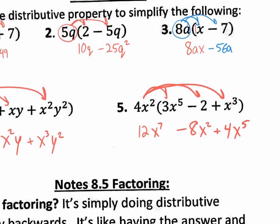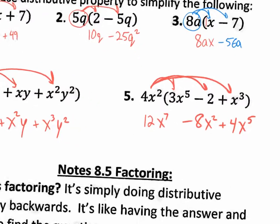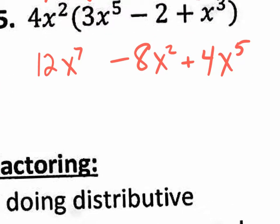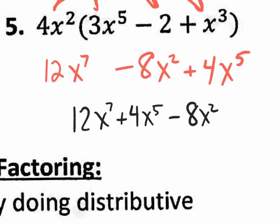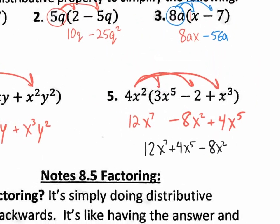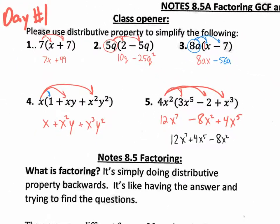I'm noticing that on this one specifically, it's out of order, so let's write it in standard form. The first term, which should be the highest exponent term, is 12x to the seventh. The next term should be 4x to the fifth. And the last term should be minus 8x squared. That's about all we could do on this class opener — it's all a review of distributive property, which we should know.